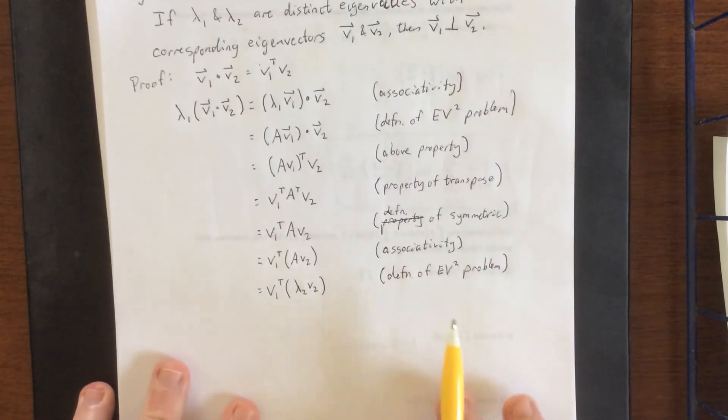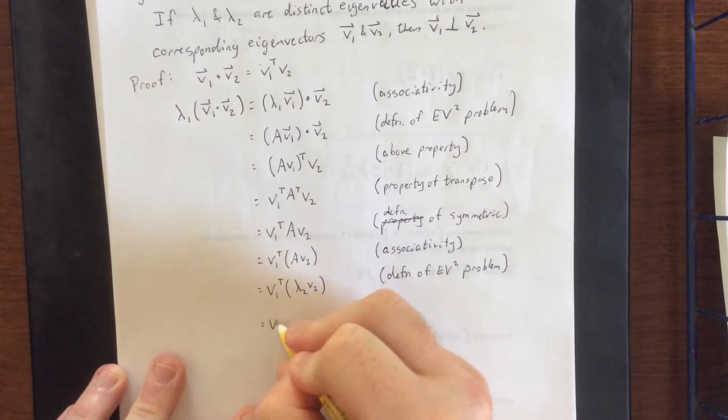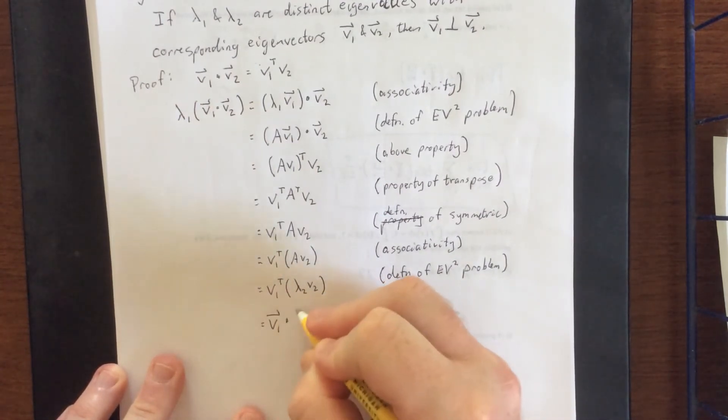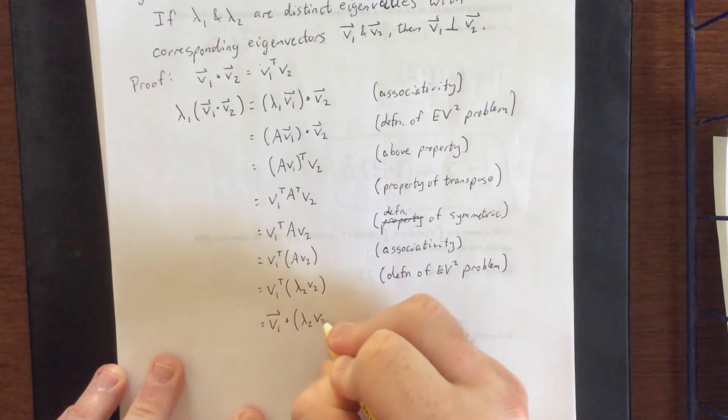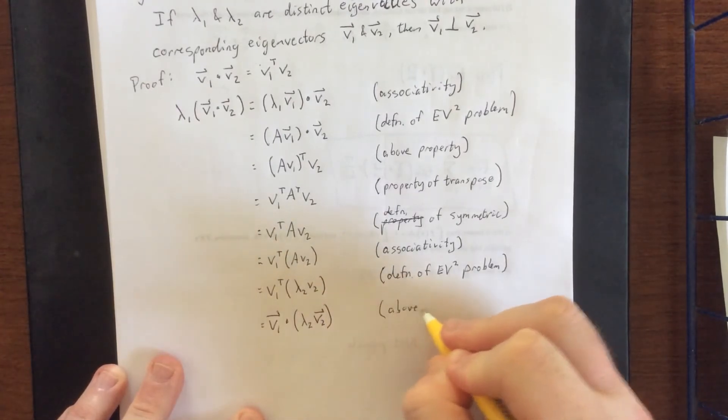Next, when we have the transpose of a vector times another vector, that's the same as saying take their dot product. So this would be V1 dotted with lambda 2 times V2. So that's again using the above property.